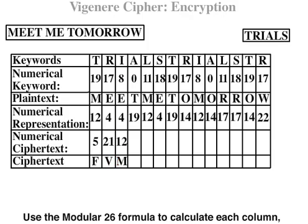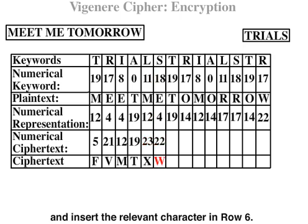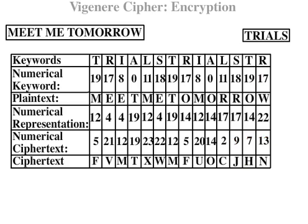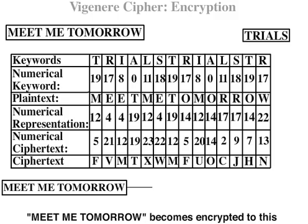Use the modular 26 formula to calculate each column and insert the relevant character in row 6. 'Meet me tomorrow' becomes encrypted to this ciphertext.